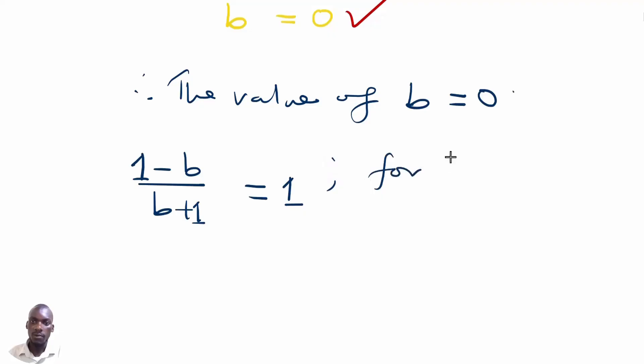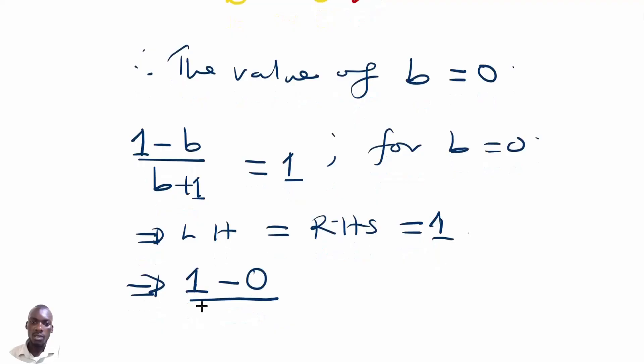So we are saying that for b equals to 0, let us check whether the 1 on the left hand side equals to the 1 on the right hand side. So by substituting in for b equals to 0, we are going to have 1 take away 0 divided by 0 plus 1.